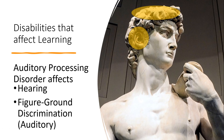Auditory processing disorder is a learning disability that affects hearing. It is commonly misinterpreted as a person that is hard of hearing, but there is nothing wrong with their hearing — in reality it is much more complicated. Auditory processing problems involve the brain's ability to process the accuracy of what is heard, memory of what is heard, organization of what is heard, and what's called figure-ground discrimination, which is having the ability to discern single sounds from surrounding sounds.